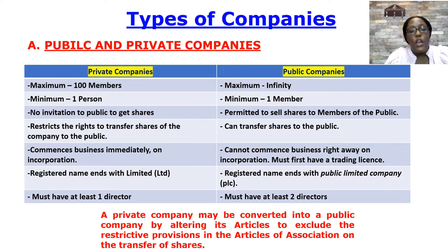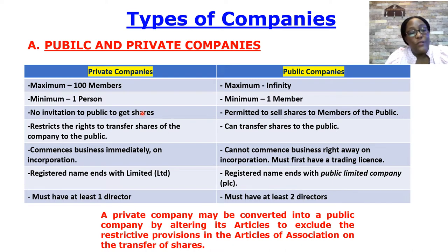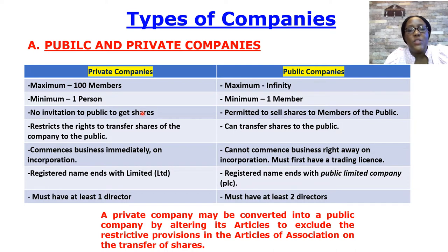There are different types of companies that exist. We have private companies and we have public companies, and the distinction between these two is critical. Private companies are established by you and me — maximum 100 members, minimum one member. The public is not involved, there is a restriction on the right to transfer shares, and once registered with a certificate of registration you can start business right away. A private company must have at least one director.